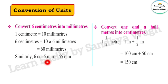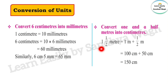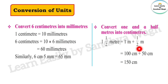6 centimeters means 60 millimeters, plus 5 millimeters, so the answer is 65 millimeters. Now the next question: convert one and a half meters into centimeters. One and a half meters means 1 meter plus half a meter. 1 meter is equal to 100 centimeters.